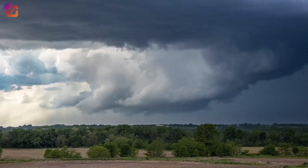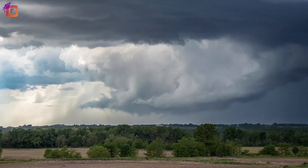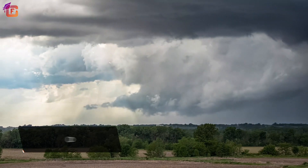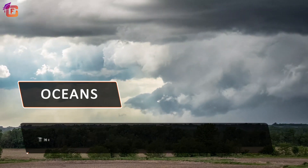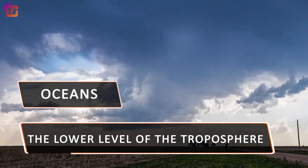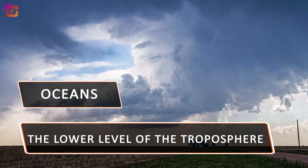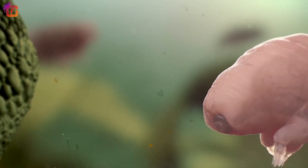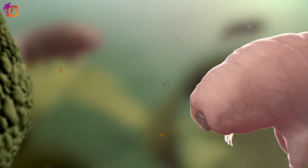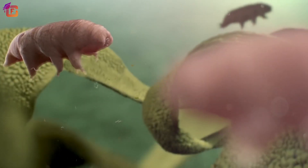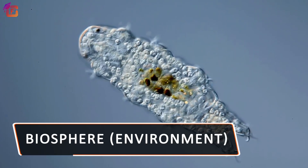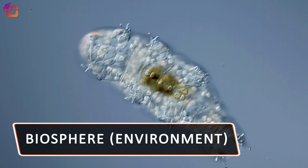This sphere extends from a few kilometers under the earth's surface into the oceans and into the lower level of the troposphere. On this planet earth there are various species of organisms of different sizes, ranging from microbes and bacteria to huge mammals. All these creatures are linked to each other and in turn to the biosphere, that is, the environment, for their survival.